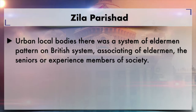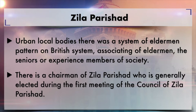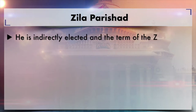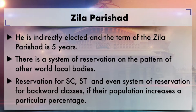Like urban local bodies, there was a system patterned on the British system of associating senior or experienced members of society. So with these four categories of members, the Zilla Parishat council is formed. There is a chairman of Zilla Parishat who is generally elected during the first meeting of the council — he is indirectly elected. The term of the Zilla Parishat is five years, and there is a system of reservation on the pattern of other local bodies — reservation for SC/ST.